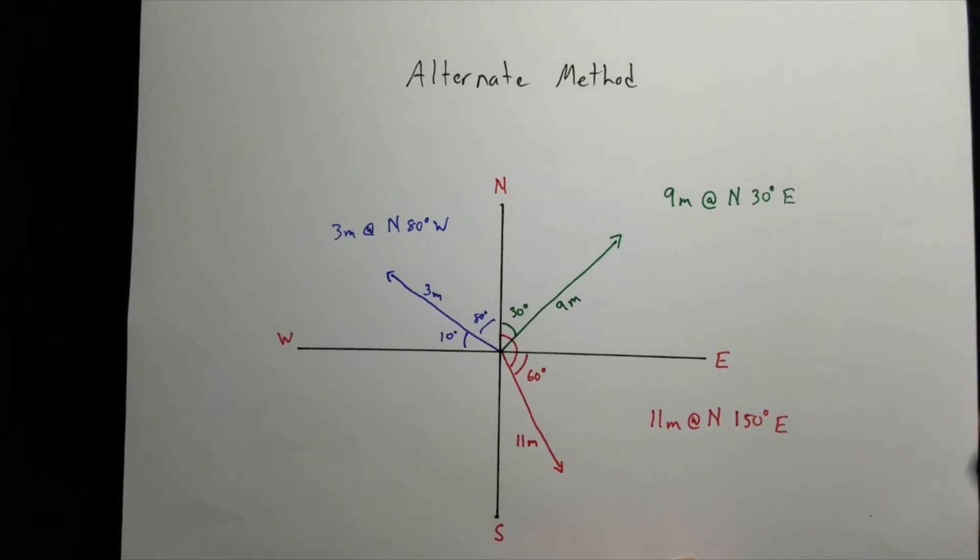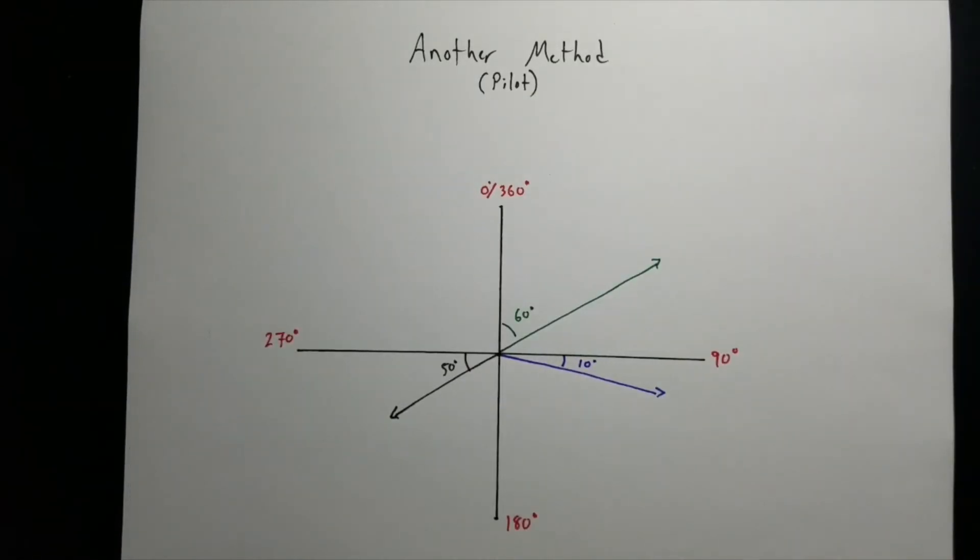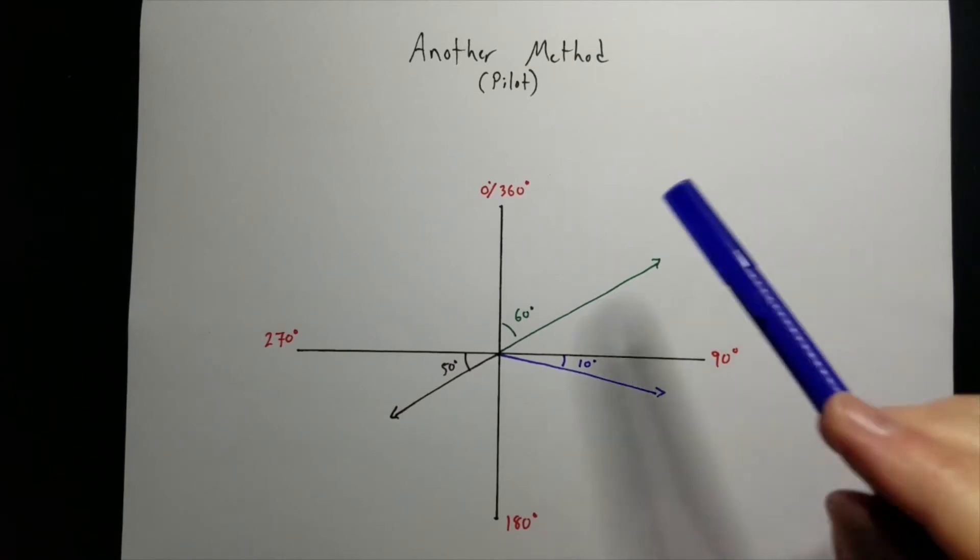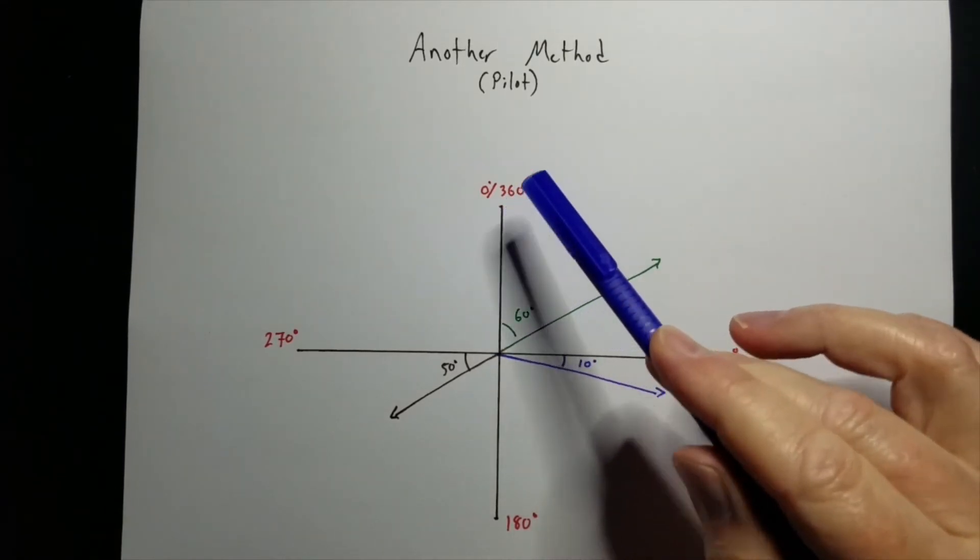Let's look at a coordinate system that actually pilots use. So have you ever wondered how a pilot knows which runway to land on? Well, it all comes from direction and vectors.